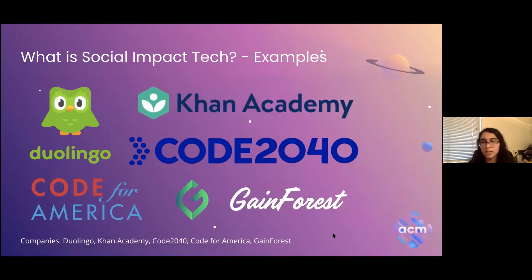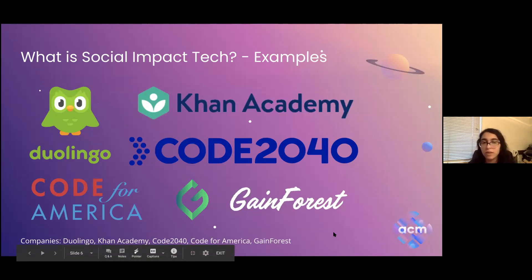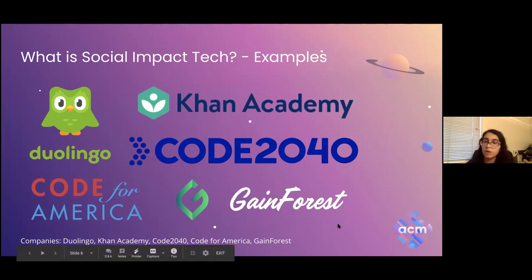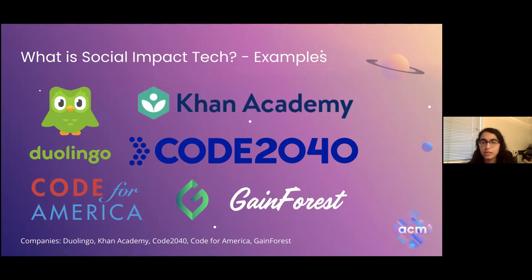What does social impact tech look like in the real world? One example is Duolingo, which increases access to language learning education, which has been really inaccessible for a lot of communities. Khan Academy — I'm sure we've all heard of it, definitely helpful in high school. Code2040 is a great diversity org focused on professional development in tech, primarily for Black and Latinx folks.